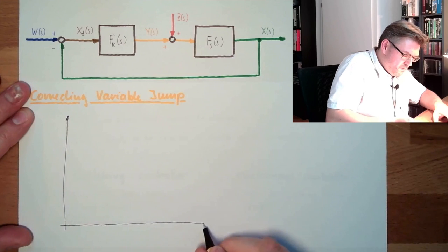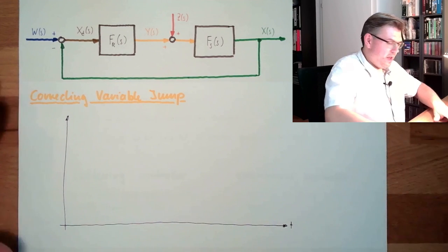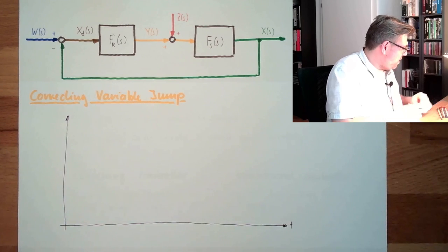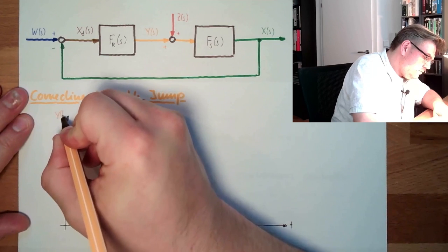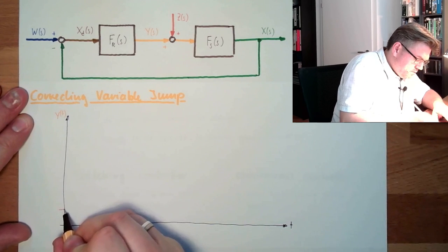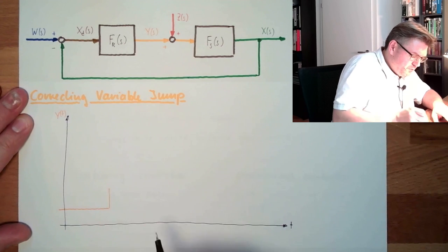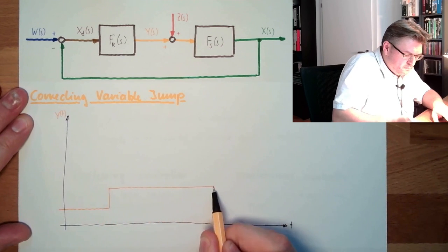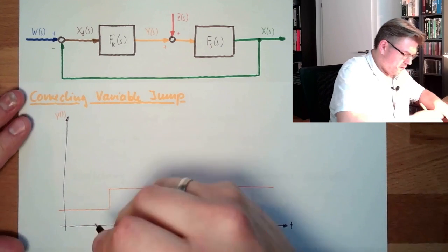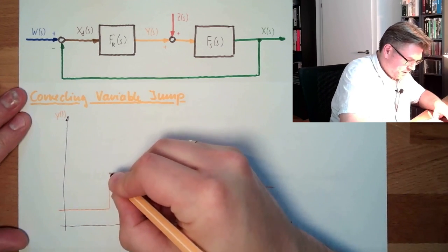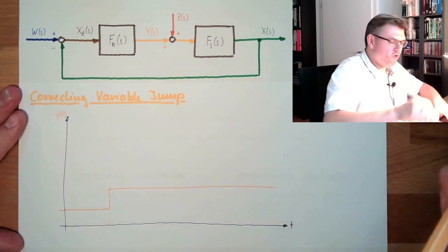Here is the time axis t, and we have a certain correcting variable y at a certain value. At some point in time we let this jump to another value. So here, at this point in time, we are changing the correcting variable.